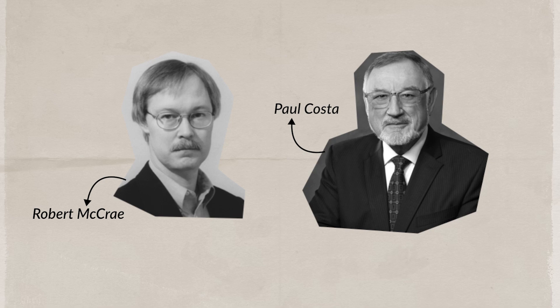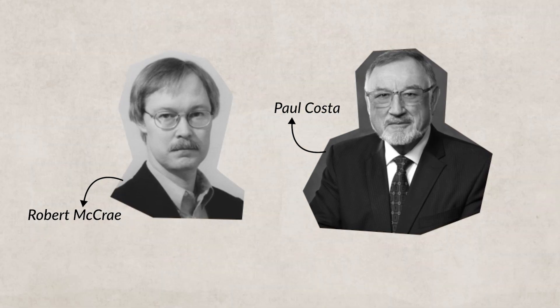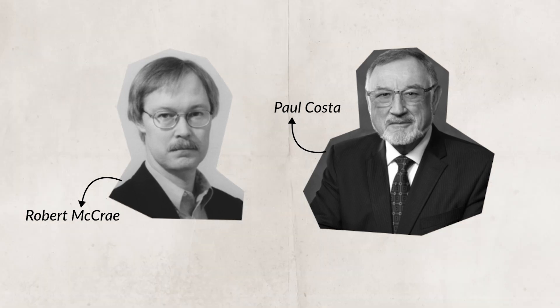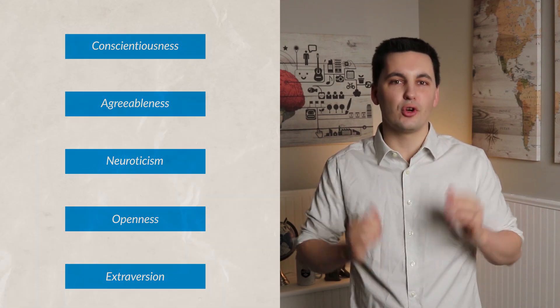Lastly, we have Paul Costa and Robert McCrae, who are known for the five-factor personality model. We last talked about this model in our Unit 7 Topic 5 video. Costa and McCrae looked at other studies that focused on personality traits and used factor analysis to come up with five different dimensions of personality: conscientiousness, agreeableness, neuroticism, openness, and extroversion. The five-factor personality model is something you'll want to remember, as these traits are important and have a major impact on an individual's personality. If you need a more in-depth review, make sure to check out my Unit 7 Topic 5 video.